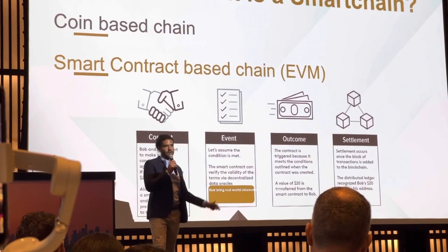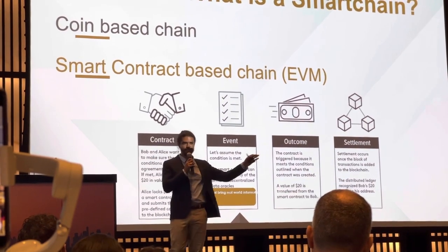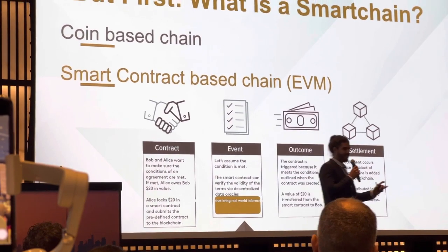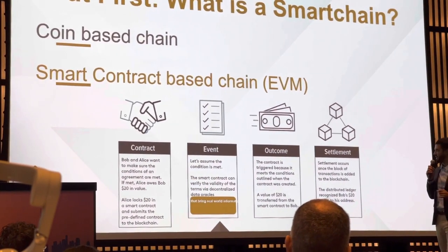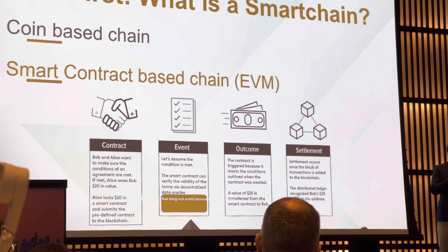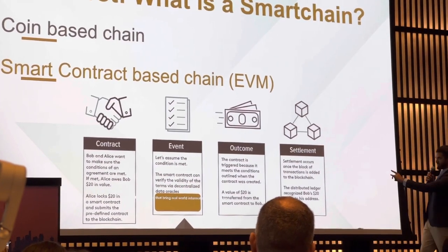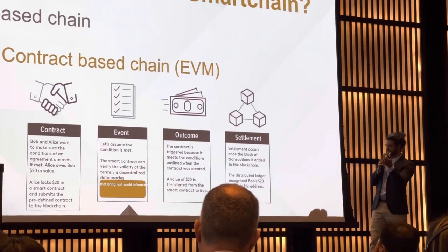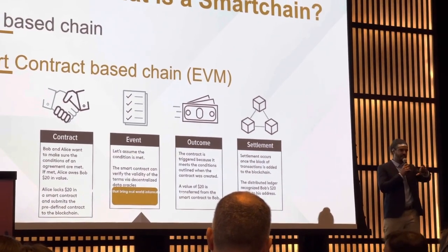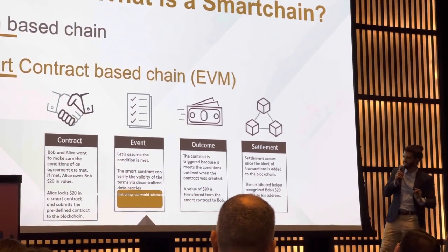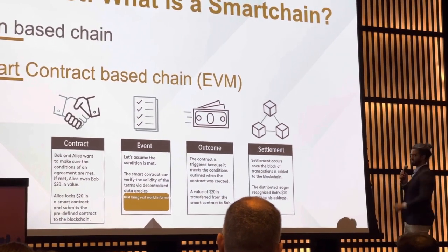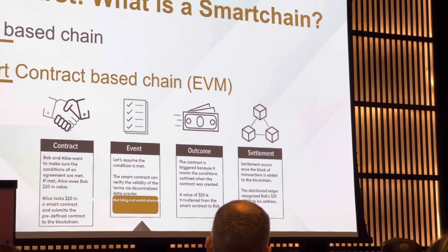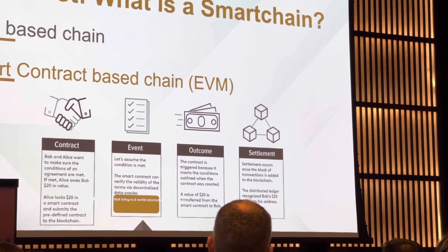The contract from an Oracle — Oracle is basically a program that can read information from outside. So this Oracle says, 'I can see here that you received your product and everything's fine.' This event that everything's okay, the event of the contract, triggers the execution of the contract. If everything is fine with your product, then the money is sent to the seller and it's settled. We've now eliminated trust from the equation.